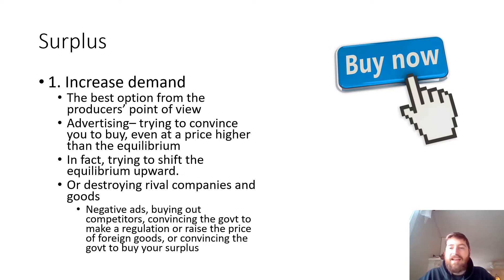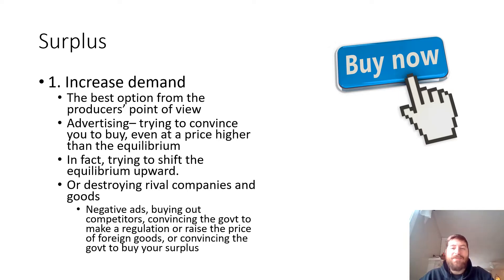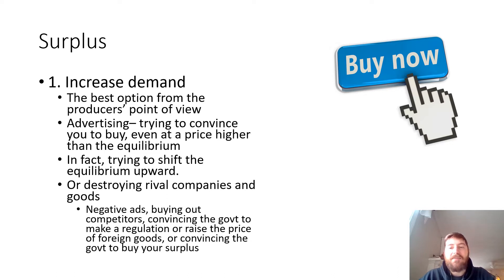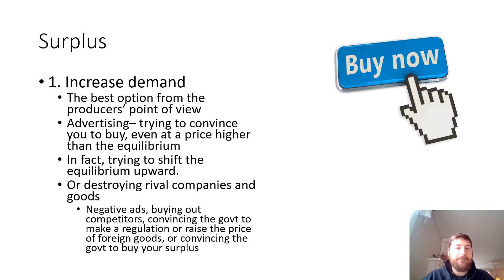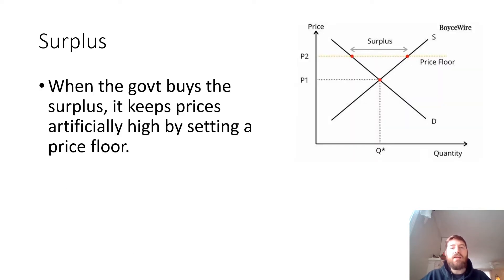You can try to destroy rivals with negative advertising — saying how terrible their products are, like what politicians do with voters as customers. You can try to buy out your competitor so they're no longer a competitor. Maybe you can convince the government to raise the price of foreign-made goods, hurting foreign competitors and leaving more customers for you. Or you can try to convince the government to buy your surplus, which also happens.